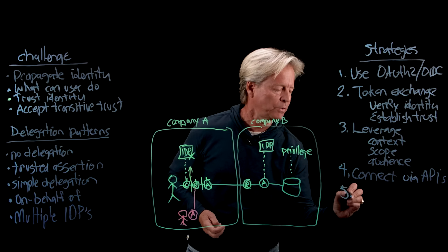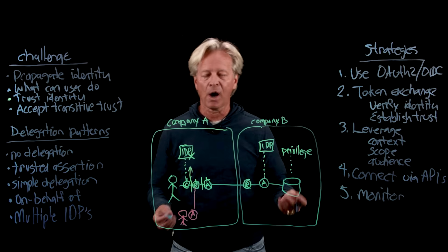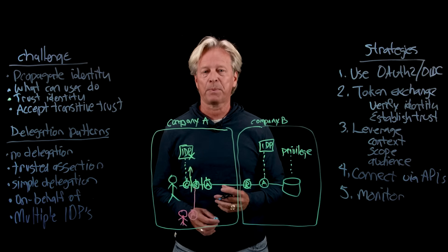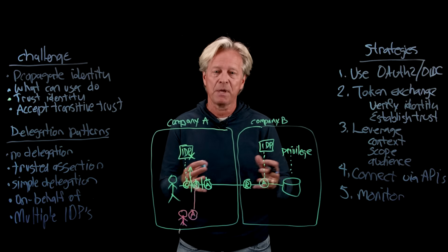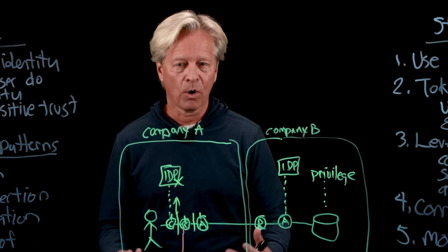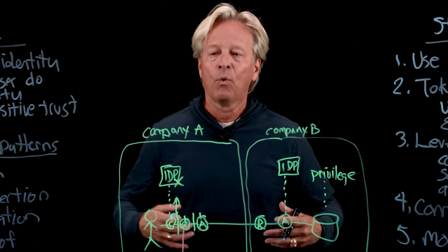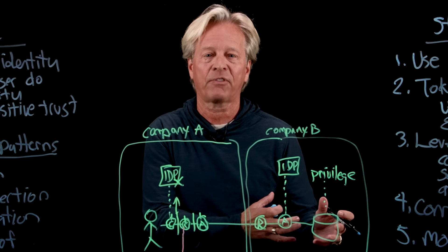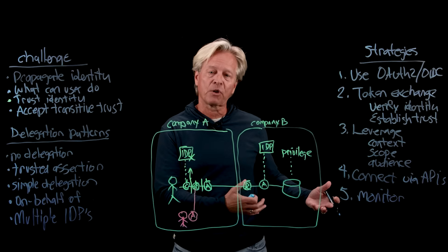The final thing, and this is something we always want to do, is monitor. When we're talking about compliance and security, we always want to monitor what is happening across that agentic flow and make sure that the identity propagation is actually behaving the way we want. Companies and organizations are embracing Gen AI and agentic flows, and the challenge is how to propagate identity across that flow securely. I've presented a few strategies on how you can accomplish that. Thank you very much.